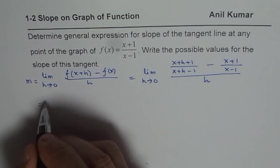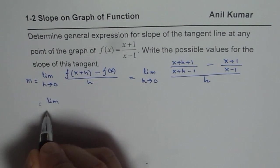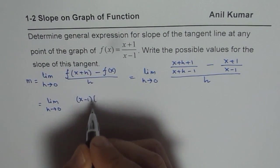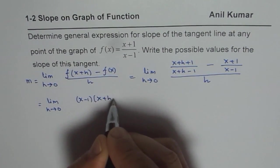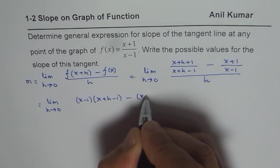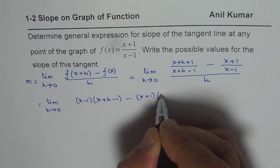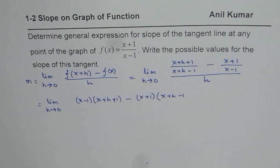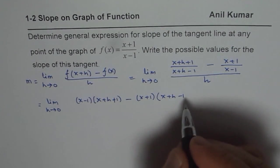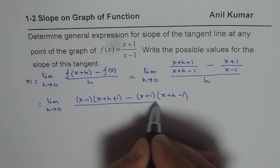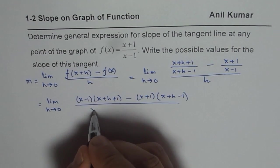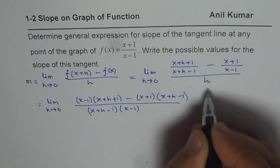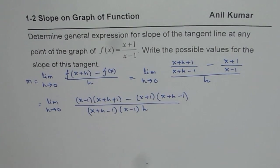Now we can cross multiply. So we get limit as h approaches 0. When you cross multiply, you get (x-1)(x+h+1) minus (x+1)(x+h-1). This is plus 1 here. All this. And in the denominator, you get product of these two, which is (x+h-1)(x-1)h. That's what you get.